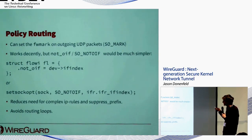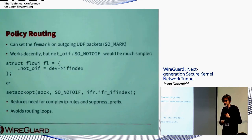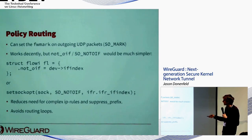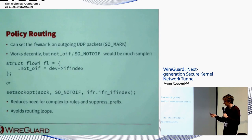For policy routing, you can set an fwmark on outgoing UDP packets, analogous to calling SO_MARK on a user-space socket, enabling 'ip rules' with fwmark and suppress_prefix. There's also a proposed 'SO_NOT_OIF' or struct flow_info flag where you could specify that routing should find a path assuming a certain interface doesn't exist — so encrypted packets go out through everything except WireGuard, avoiding routing loops when overriding the default route.